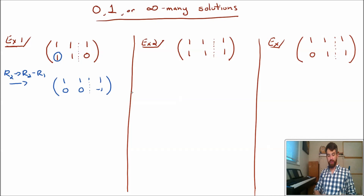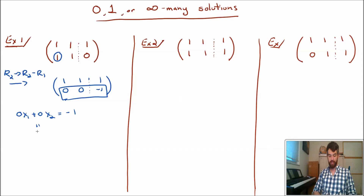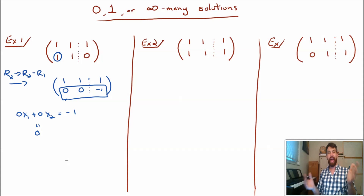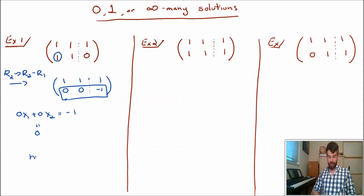If I read off the bottom row after this reduction, it tells me that 0x1 plus 0x2 equals minus 1 — in other words, that 0 equals minus 1. This cannot be. There is no x1 and x2 such that this linear combination equals minus 1. So this tells me there are no solutions. Another way to say it is that the system is inconsistent.